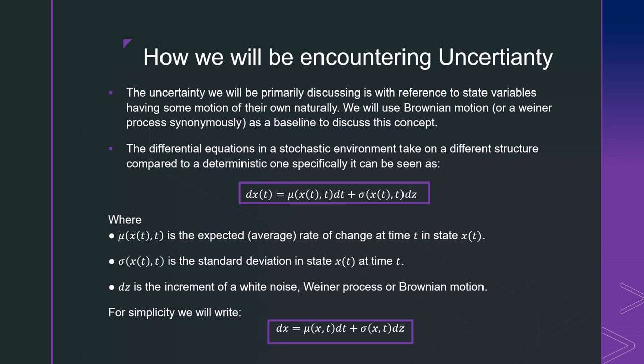Where this mu term is the expected or average rate of change at time t in state xt, sigma xt is the standard deviation in xt at time t, and dz is the increment of white noise or Wiener process or Brownian motion. For simplicity, we're going to write this as follows, just taking out x being parameterized by t just to save our notation here and make our equations a little bit more compact.